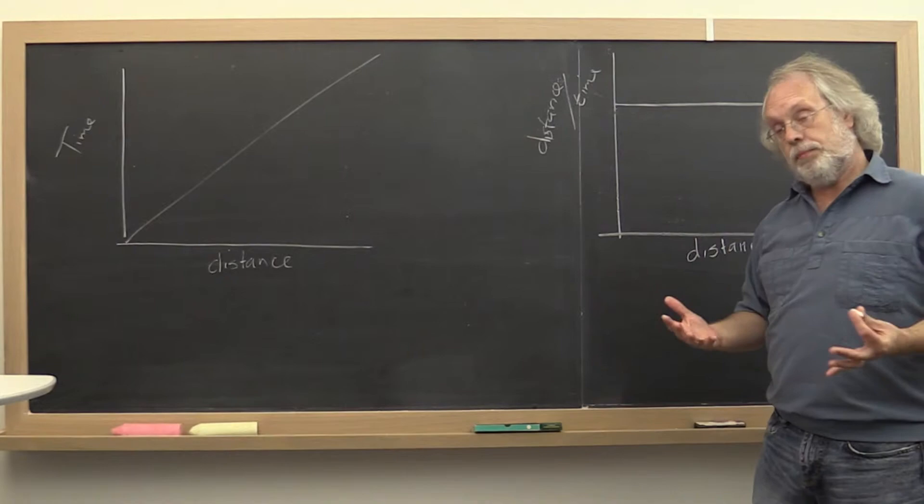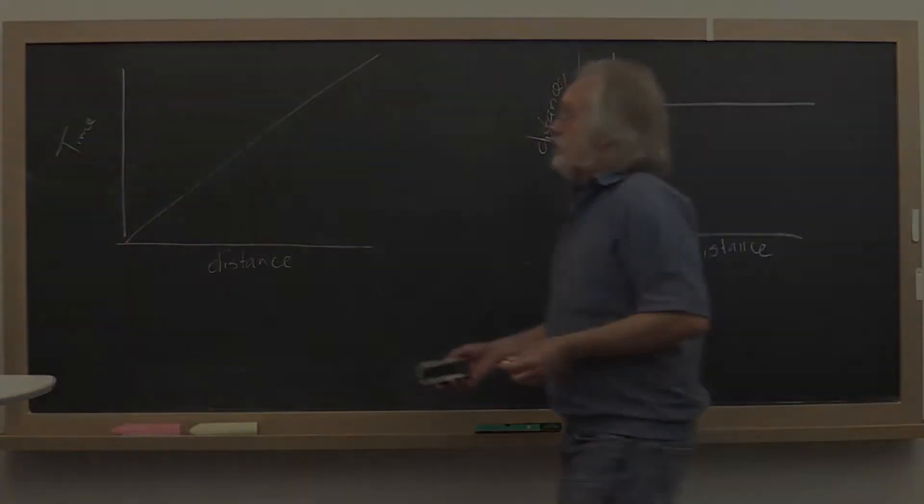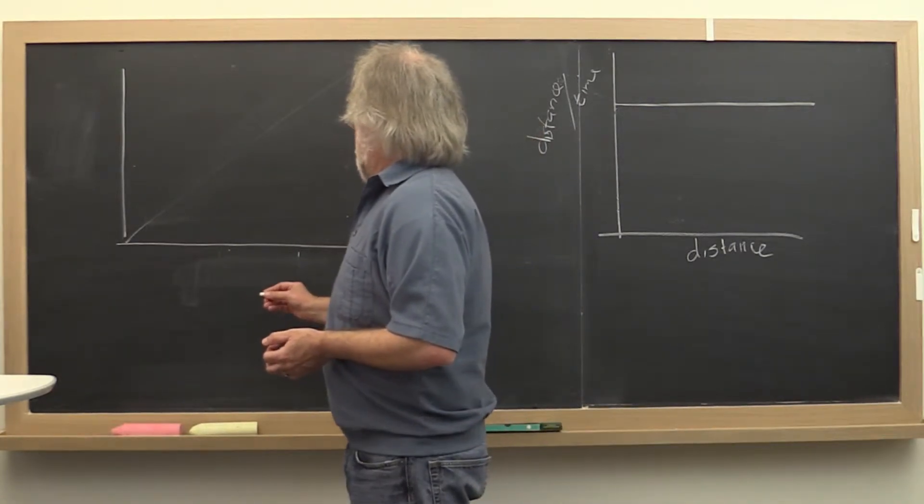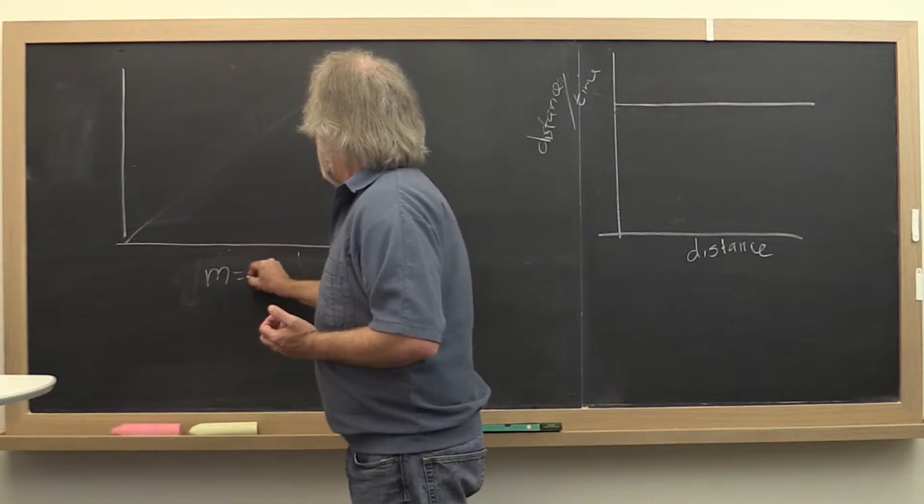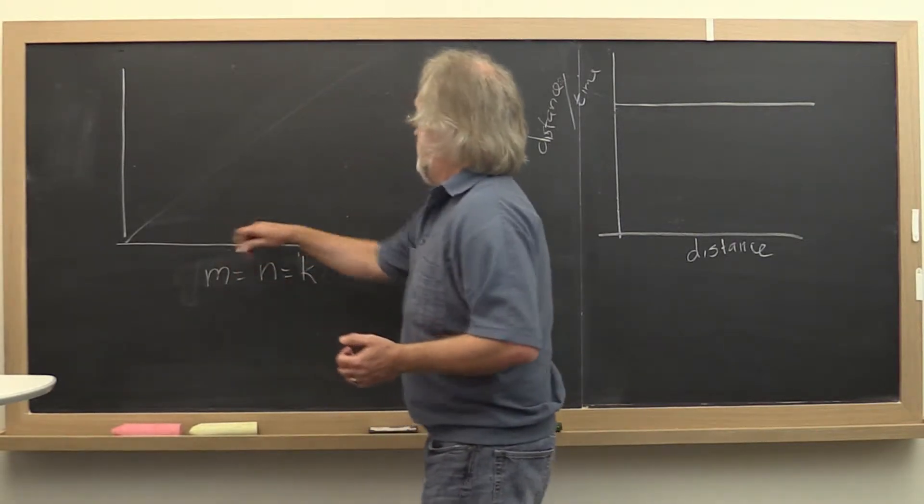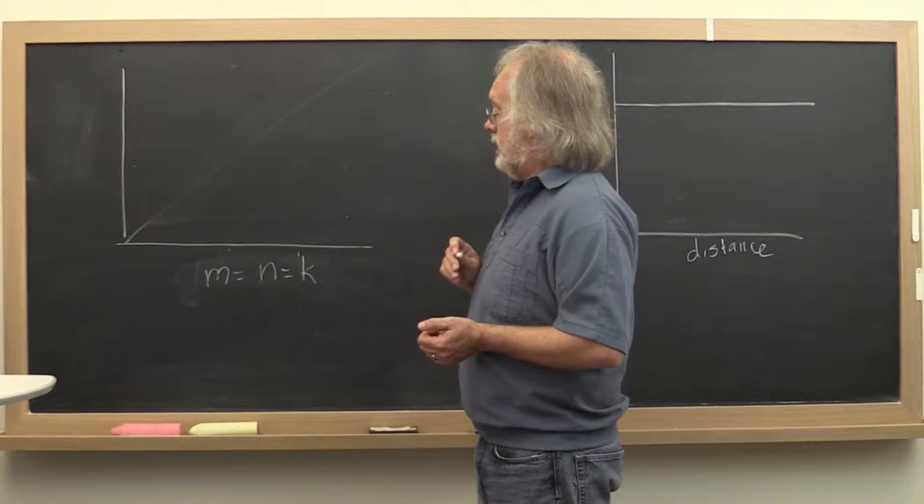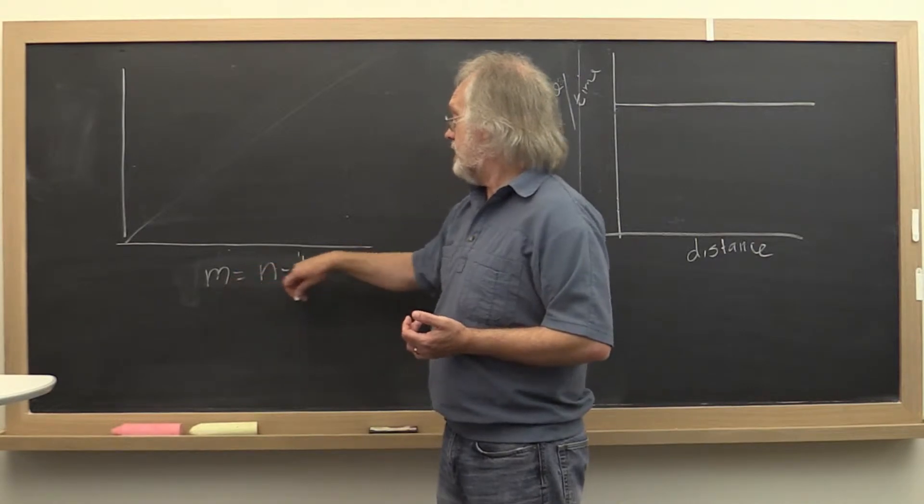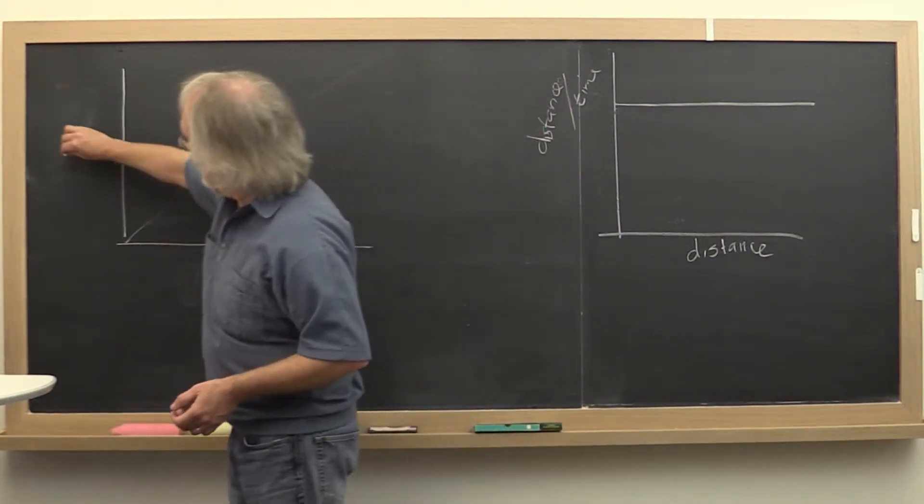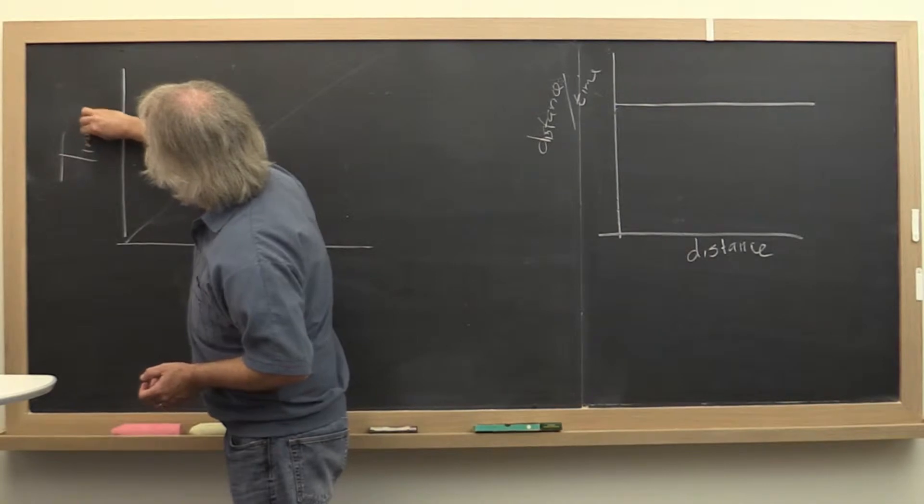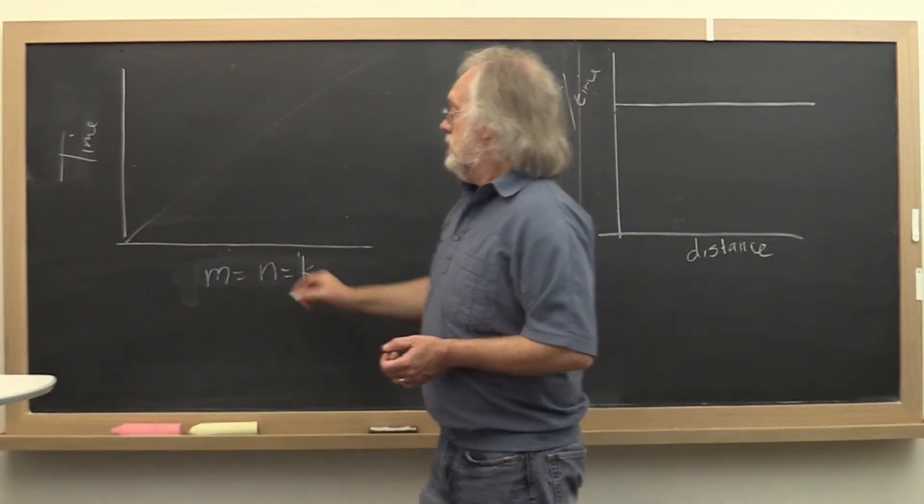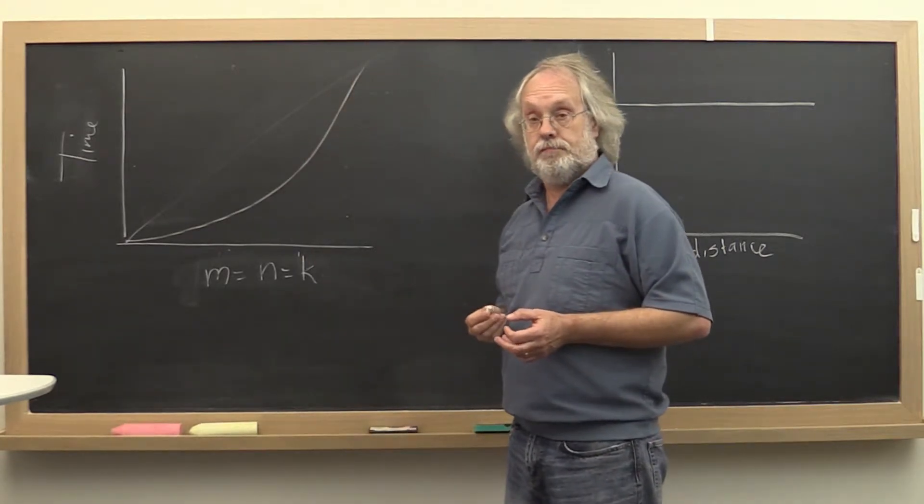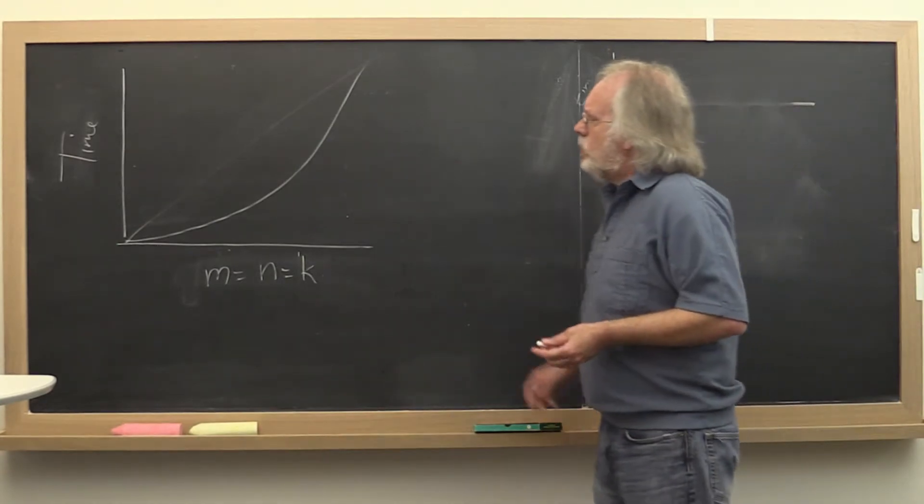So we're going to do the same thing with the data that we collected. So what have you done so far? You have plotted the sizes of the matrices along the x-axis. And in our experiments we usually take all of the matrices to be square, so m is equal to n is equal to k. And then we plotted the execution time along the y-axis. And we ended up with some kind of curve that roughly looked something like that.